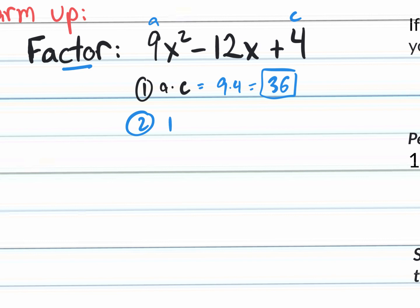How could I get 36? It's 1 times 36, 2 times 18, 3 times 12. If you don't know your multiplication tables, you can get a calculator and go 36 divided by 3, it'll give you 12. Then 4 times 9 is 36, 5 doesn't work, 6 times 6 is 36. Those are all the possible ways of multiplying numbers to give you 36.